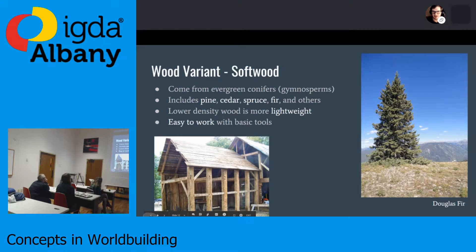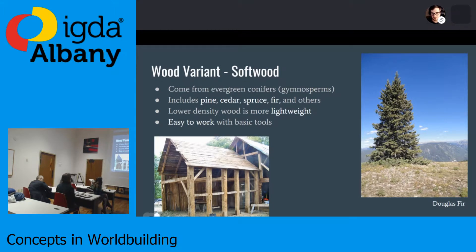Softwoods are largely evergreens — pines, cedars, spruce, et cetera. Softwoods have a lower density so they're much more lightweight, and there are a lot of benefits to that. One benefit is that they're easier to work with and easier to carry around. What a lot of people might not know is that softwood is the most common type of wood used for construction in the U.S. and many other places — pine and Douglas fir are extremely common.